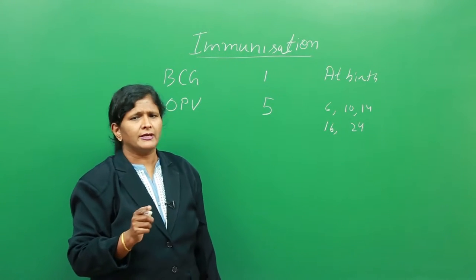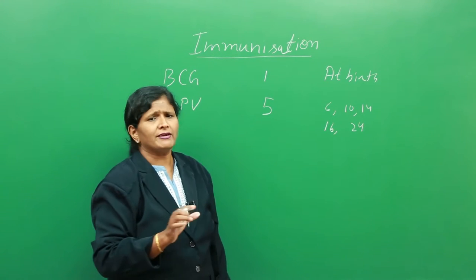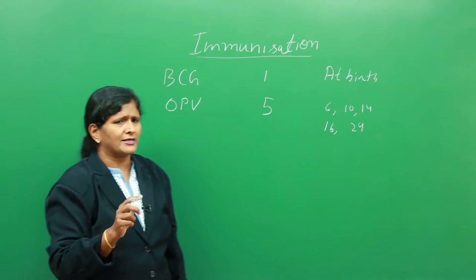16 months and 24 months. So six weeks, 10 weeks, 14 weeks, and then 16 months and 24 months. Five doses of oral polio vaccine is given.